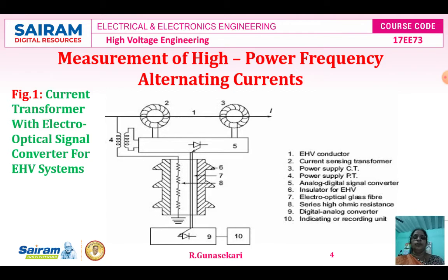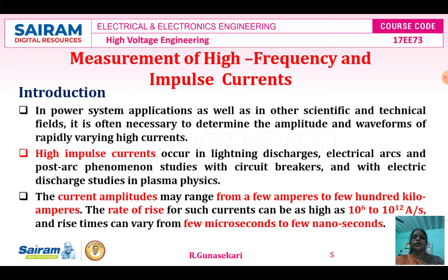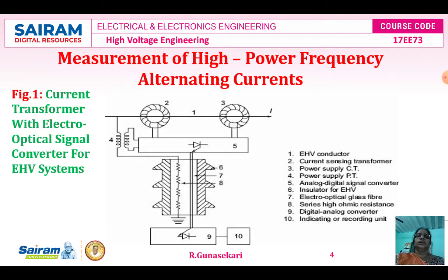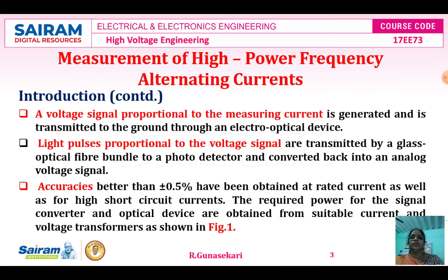Now we study about the function of the current transformer with electro-optical signal principle. The accuracy is plus or minus 5 percentage. The voltage signal proportional to the measuring current, and the light pulses proportional to the voltage signal, are used for transmission purposes.